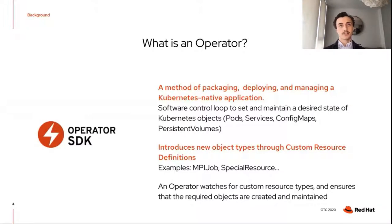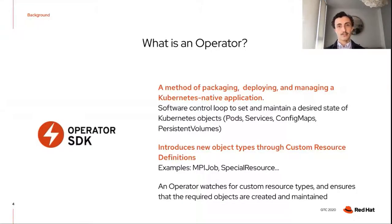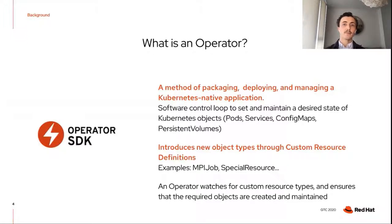In this proof of concept, I'm using several operators, including the NVIDIA GPU operator, the special resource operator, the MPI operator, and more. I want to give a little background on what an operator is for those who are new to OpenShift or Kubernetes. An operator is an extension to Kubernetes — a method of packaging, deploying, and managing an application which is deployed on Kubernetes and managed using the Kubernetes API. Operators enable the creation of new object types through custom resource definitions and manage those custom resources. One example is the MPI operator, which introduces the concept of an MPI job resource and manages MPI objects when they are created by the user.